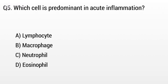Question 5. Which cell is predominant in acute inflammation? Option A: Lymphocyte, B: Macrophage, C: Neutrophil, D: Eosinophil. But the right answer is Option C: Neutrophil.